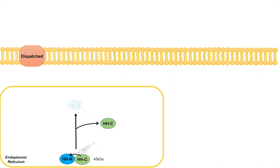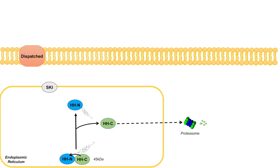This leaves the HHN, or the hedgehog N-terminal portion of the protein, with its cholesterol moiety attached. The HHC portion of the protein gets exported out of the endoplasmic reticulum and degraded by a proteasome in the cell. When we have the HHN protein with its cholesterol moiety attached, there is another protein known as Skinny Hedgehog or SKI, which is located within the endoplasmic reticulum membrane, and this protein acts on the HHN protein and adds a palmitic acid to it.